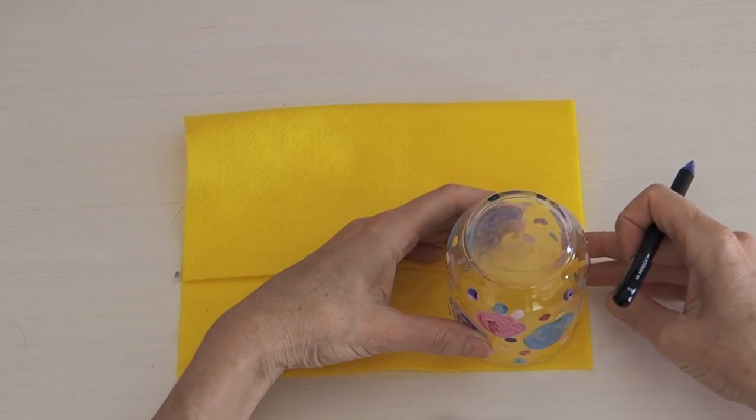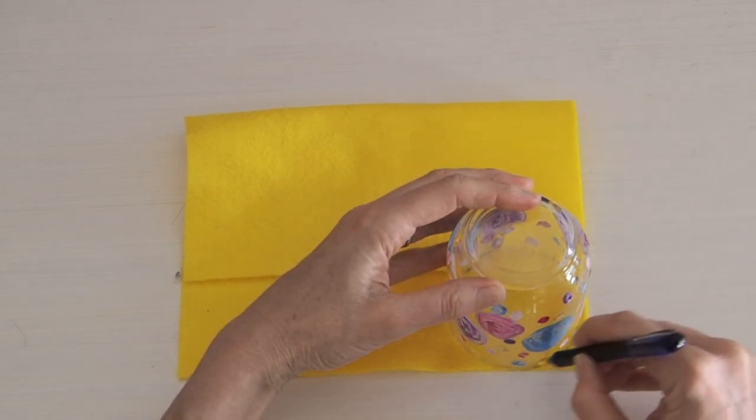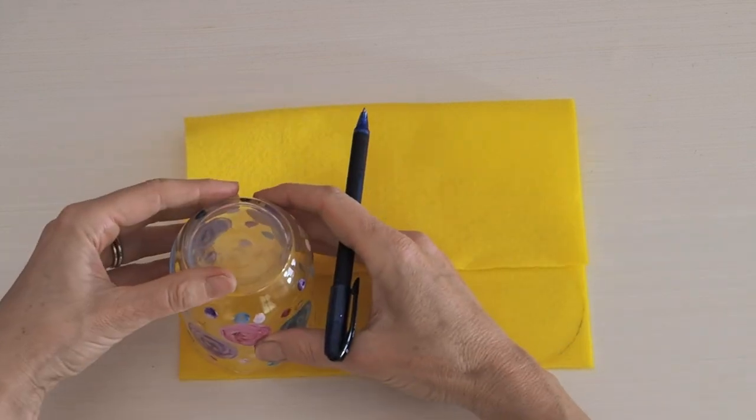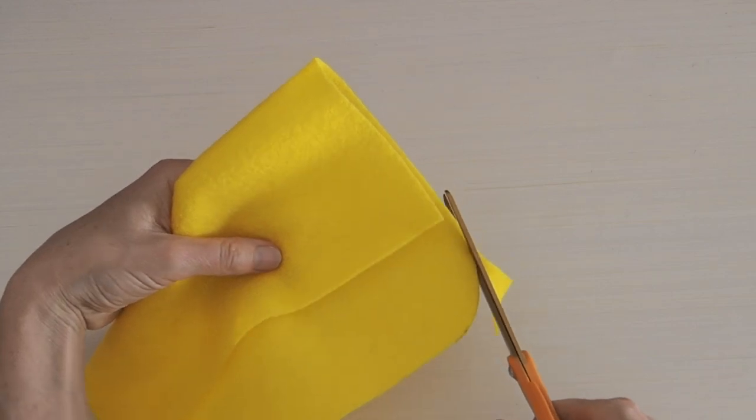Now I'm going to round those top edges. This is certainly an optional step you don't have to do this, so we're going to get that glass or plate, whatever you have, and just draw along there just to simply round off those edges and then we're going to just cut them.